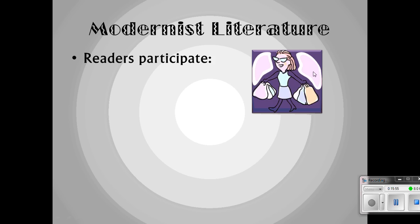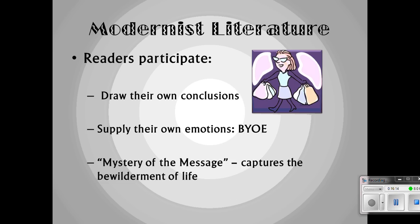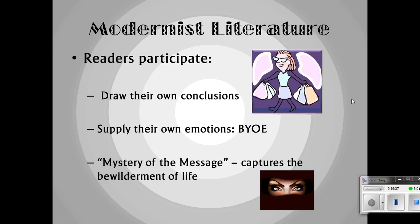With modernist literature, we need to make sure we approach it in the right way. The first thing to remember is to bring your own emotions. Often in modernist literature — especially in the piece we're going to read by Ernest Hemingway — we need to look at what's going on in the dialogue between characters and figure out things for ourselves, because the mystery of the message is there somewhere. Sometimes it's a little bit too stark, a little bit too sparse, and we have to try to bring things into it to find the real meaning.